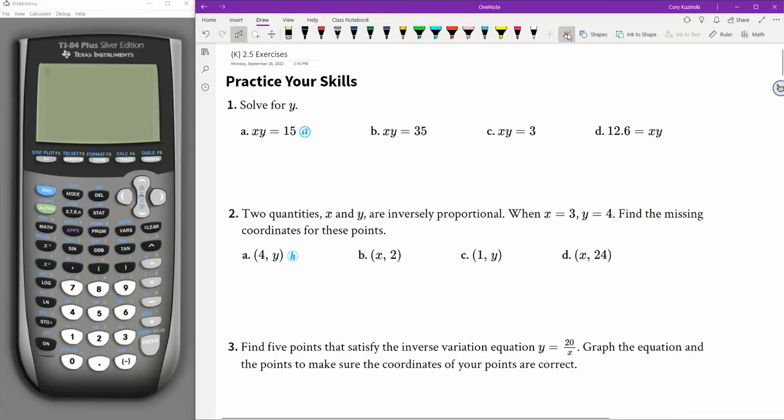Solve for y. Well, if x times y equals 15, this is direct variation at its very best here. x times y will always give us k, and y will always be found by doing k divided by x. So in this case, our answer is just y equals 15 over x. That's it.